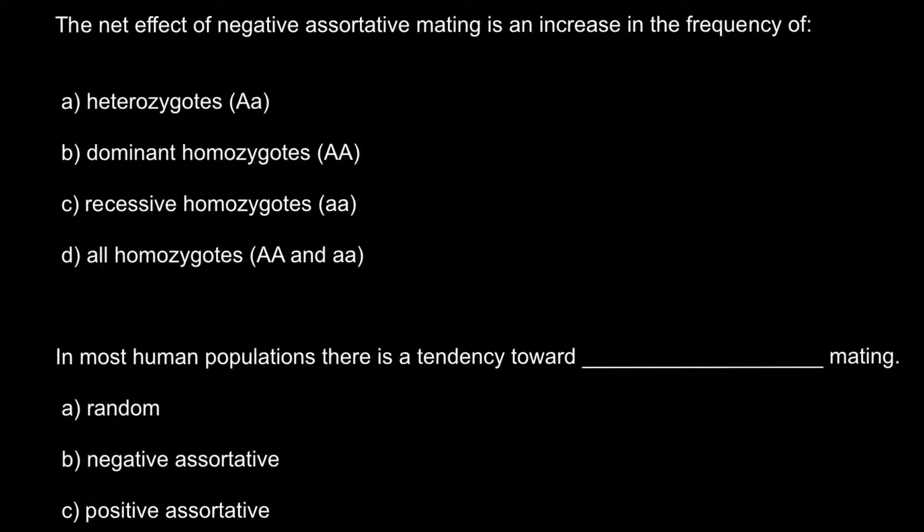Answer A: heterozygotes (Aa). Answer B: dominant homozygotes (AA). Answer C: recessive homozygotes (aa). And answer D: all homozygotes, that is, homozygous dominant and homozygous recessive.